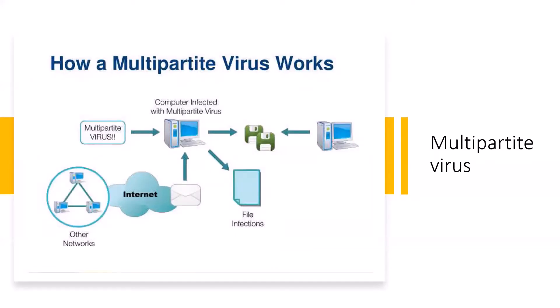Multipartite Virus. Most viruses either affect the boot sector, the system, or the program files. The multipartite virus can affect both the boot sector and program files at the same time, causing more damage than any other kind of virus. When the boot sector is infected, simply turning on the computer will trigger the virus because it attaches itself to the hard drive that contains the data needed to start the computer. Once the virus has been triggered, it spreads throughout the program files. Examples are Invader, Flip, and Tequila.